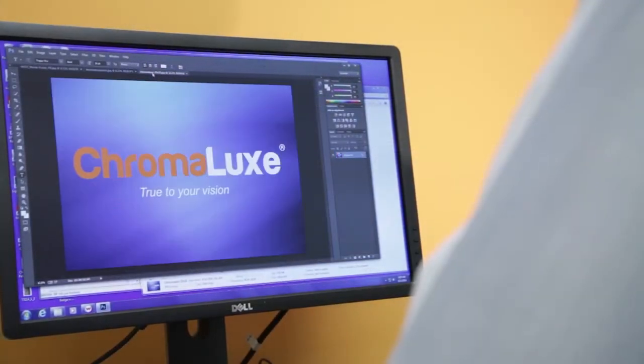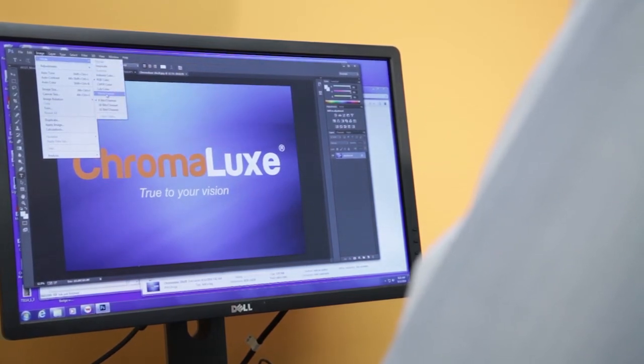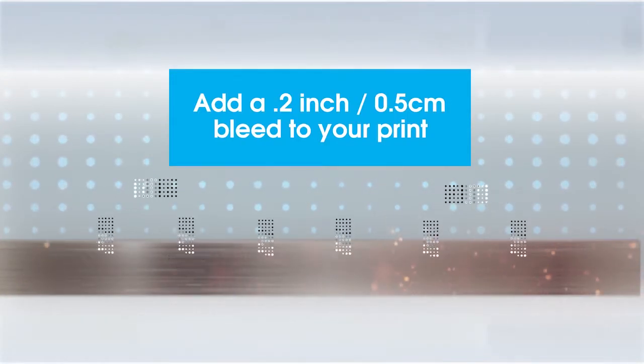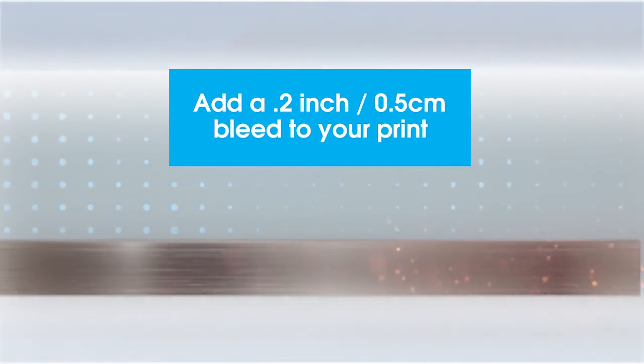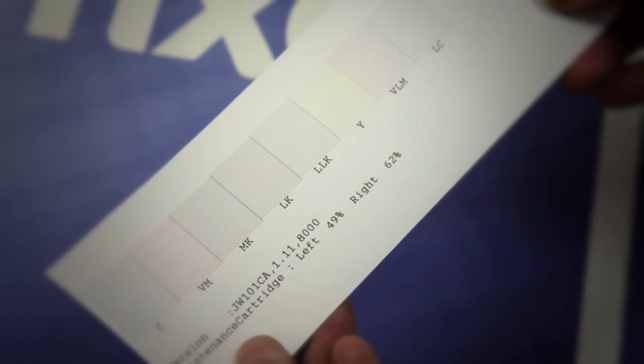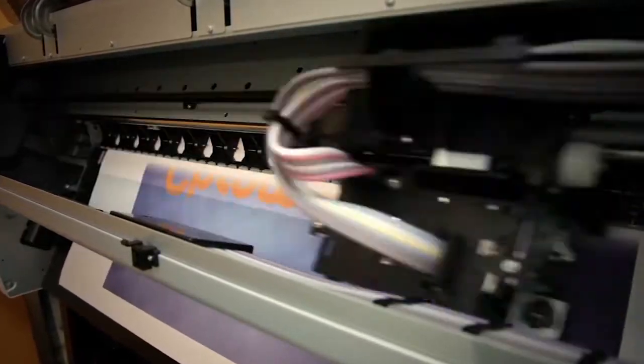Once you have set up your system and are ready to start, size your image according to the piece you'll be sublimating on. The heat will cause the metal to expand during the process, so you will want to add a .2 inch or .5 centimeter bleed to ensure you completely cover the panel. Check your printer for any clogged nozzles before printing, then send your file to print on the sublimation transfer paper.